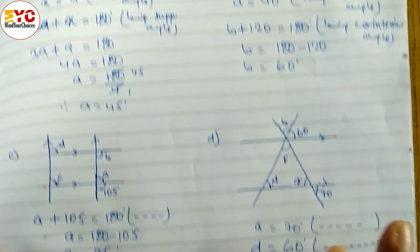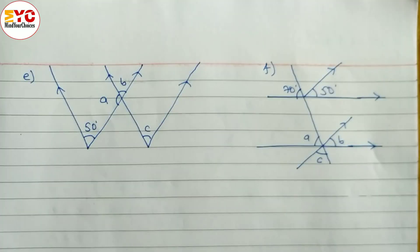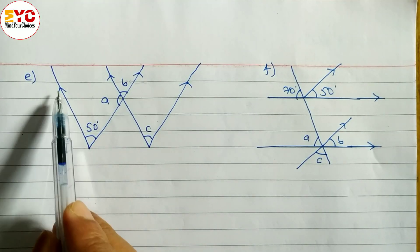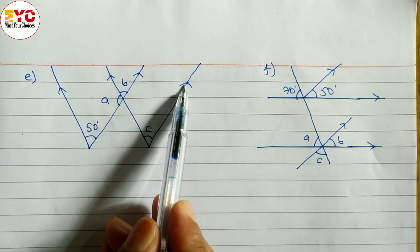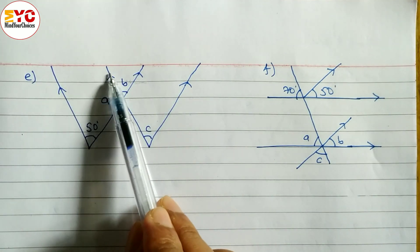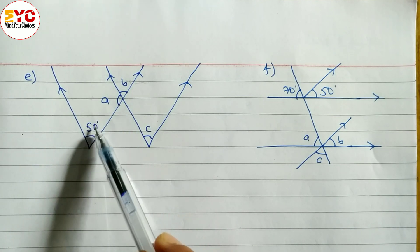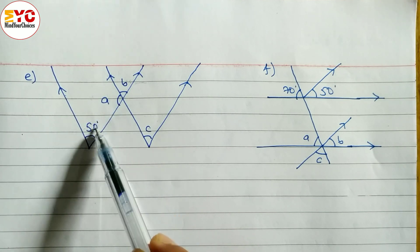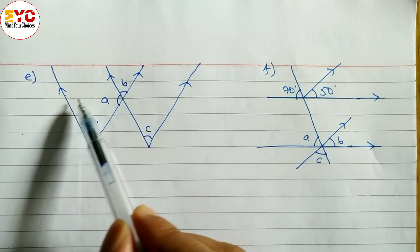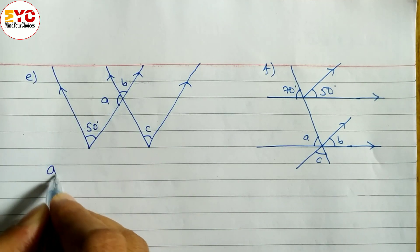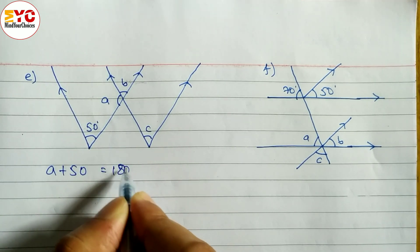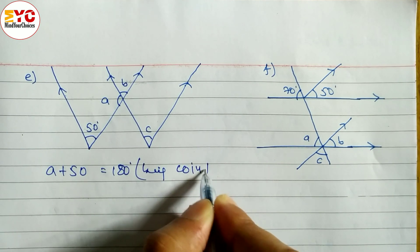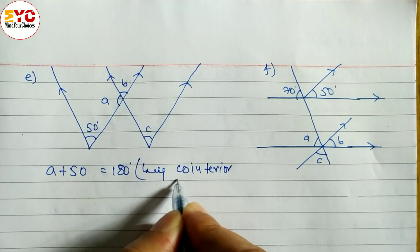Hope you understand this d number. Now look at the next question number e. You can see here this line and this line are parallel. This line and this line parallel. These two lines are parallel. Relation of these two: co-interior, because both angles are inside of this parallel line. So we can write a plus 50 is equal to 180 degrees. Reason: being co-interior angle.